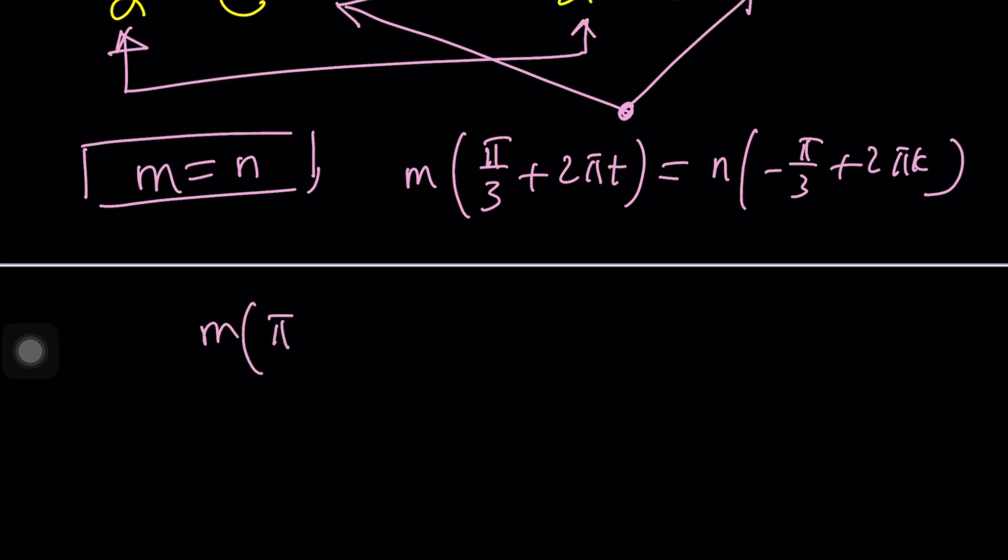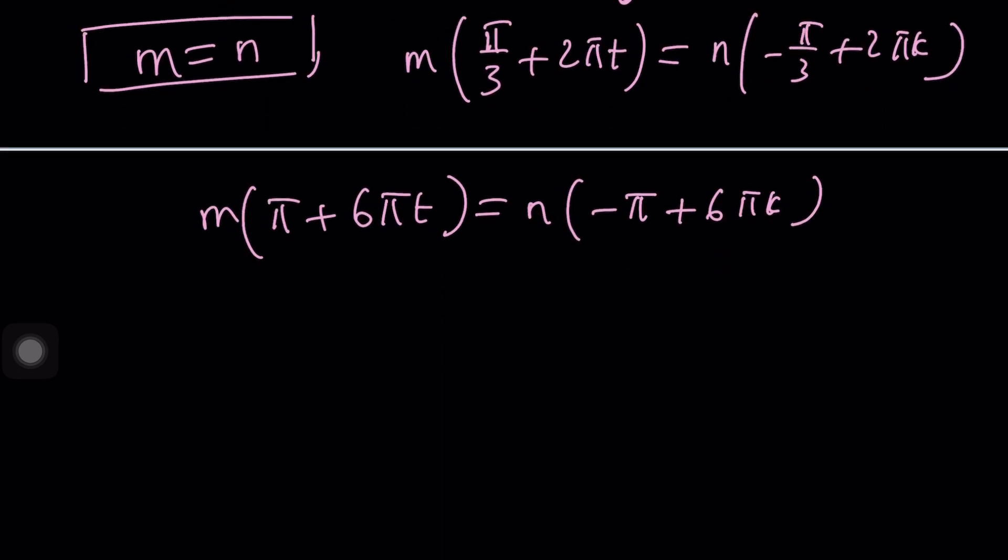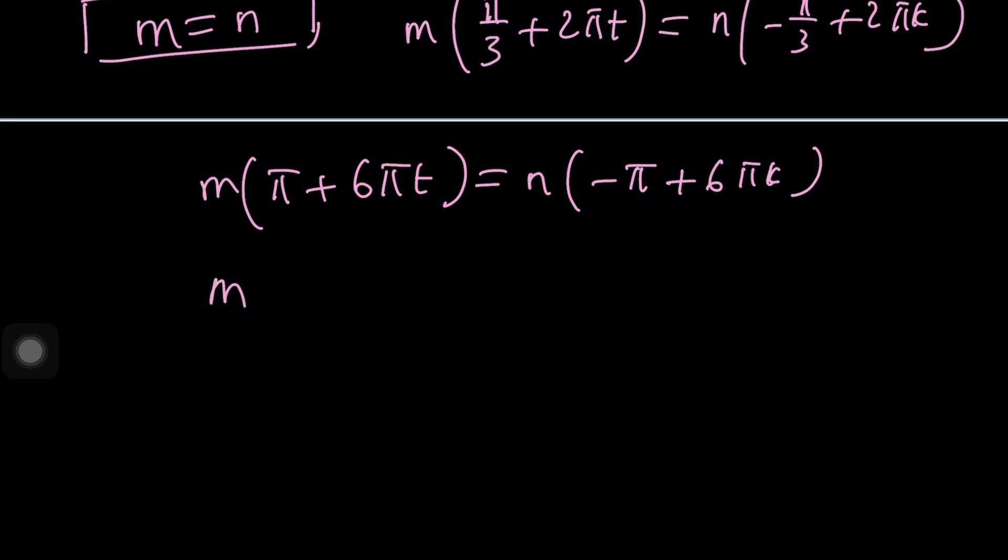That's going to give us m·π + 6πt. It's a little easier without fractions as you know, -n·π + 6πk. And now you can go ahead and distribute maybe.